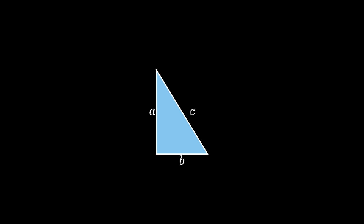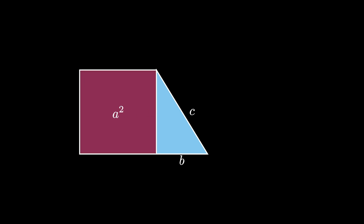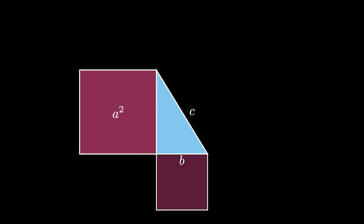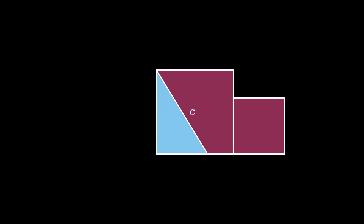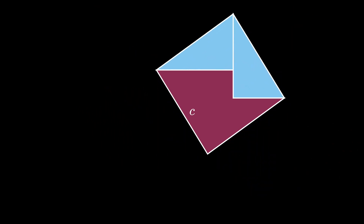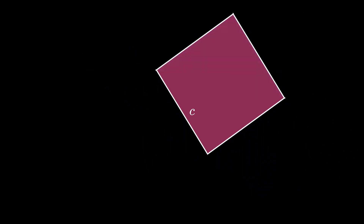This animation is based on proof number two from the compilation of Pythagorean theorem proofs on the Cut the Knot website, which is due to Alexander Bogomolny. If you're interested in how I animated this particular proof using the Python package Manim, check out my previous video where I gave a tutorial on how I produced this exact animation.